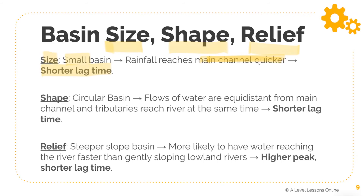For basin shape, a circular basin means that water flows are equidistant. The tributaries will all reach the main river at around the same time, leading to a shorter lag time. In a circular basin, tributaries surrounding the main river channel can all reach it very quickly. If they receive intense rainfall, they will hit their own peak discharge rapidly, contributing to the main river channel and creating a shorter lag time overall.